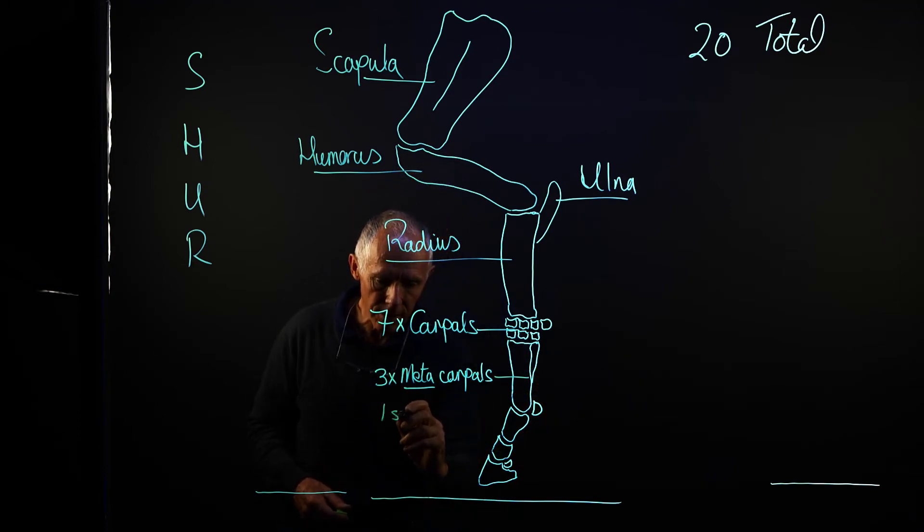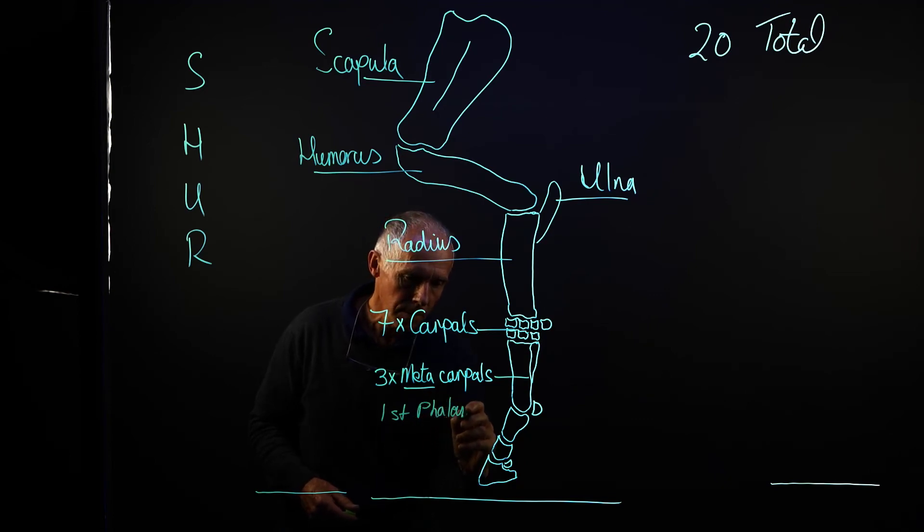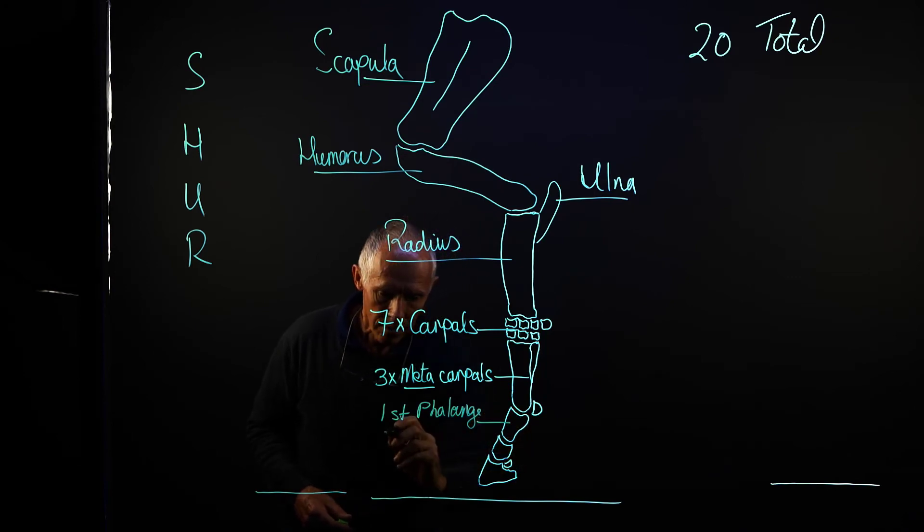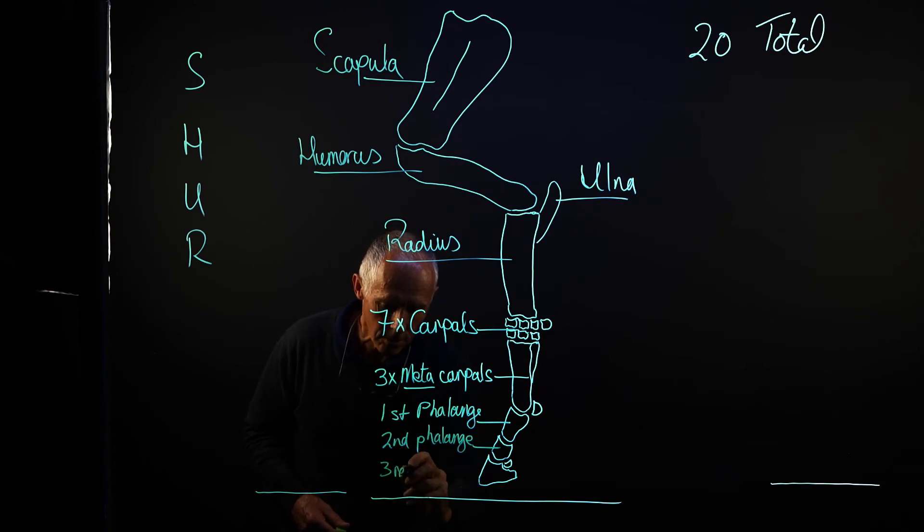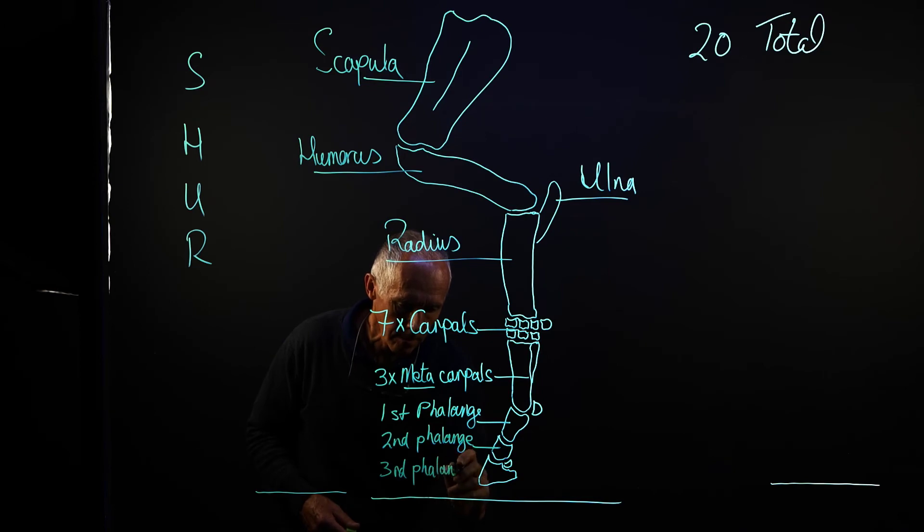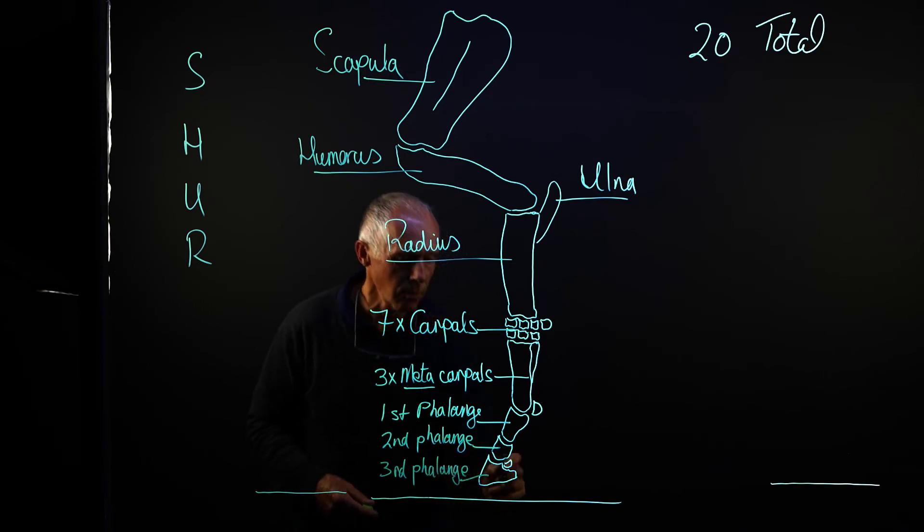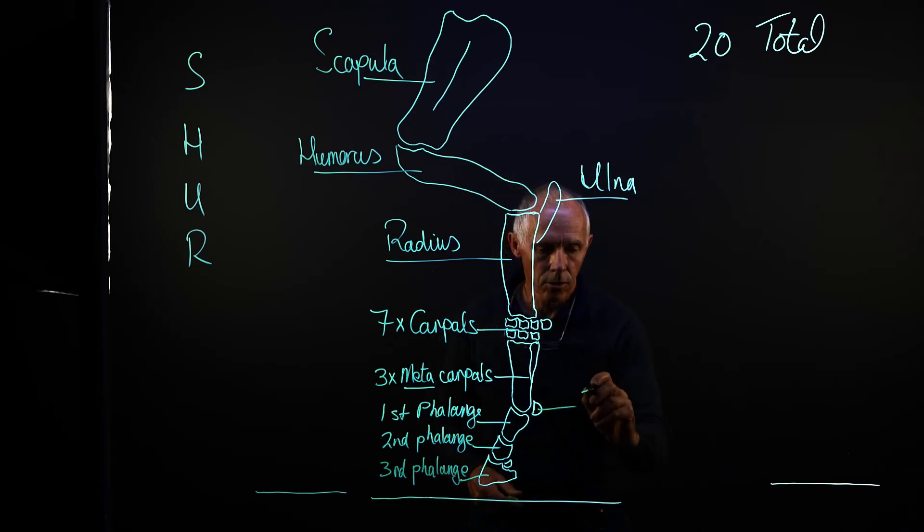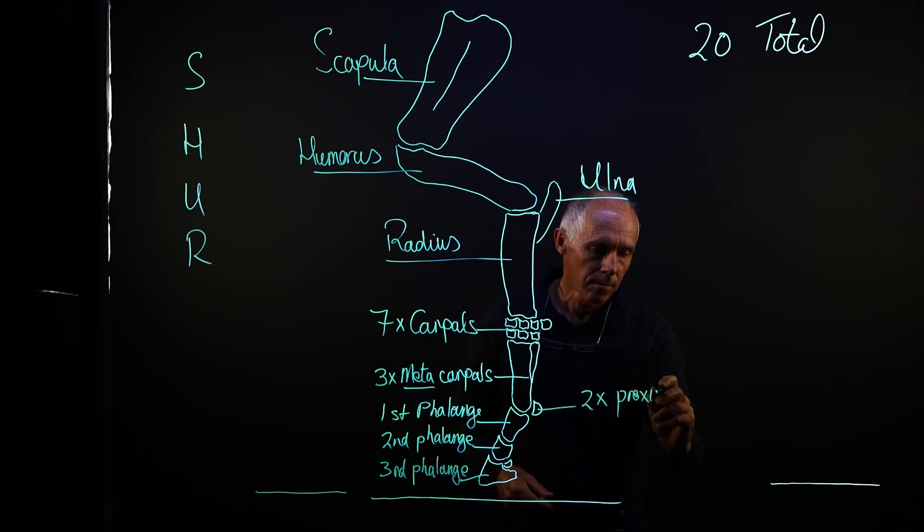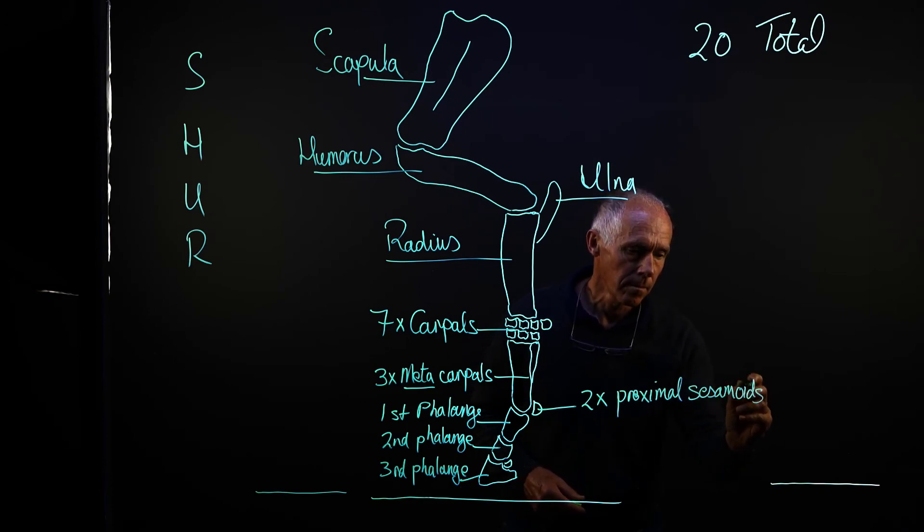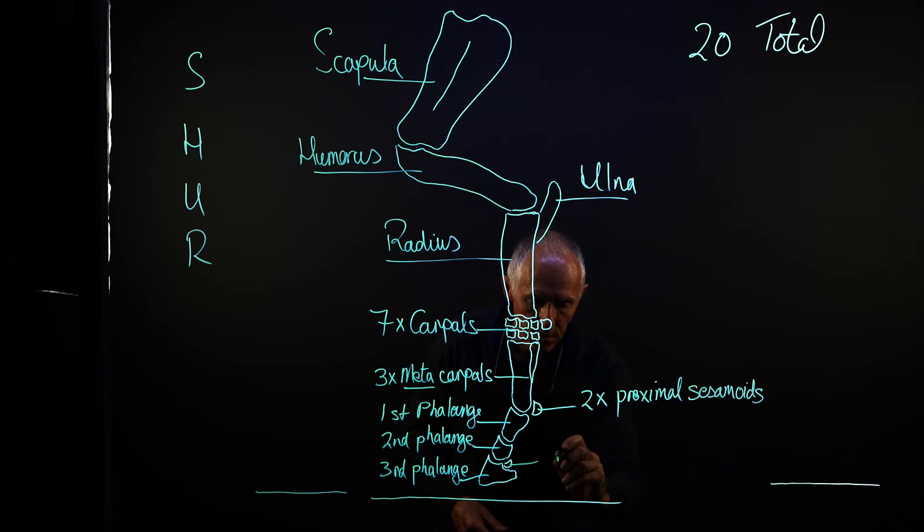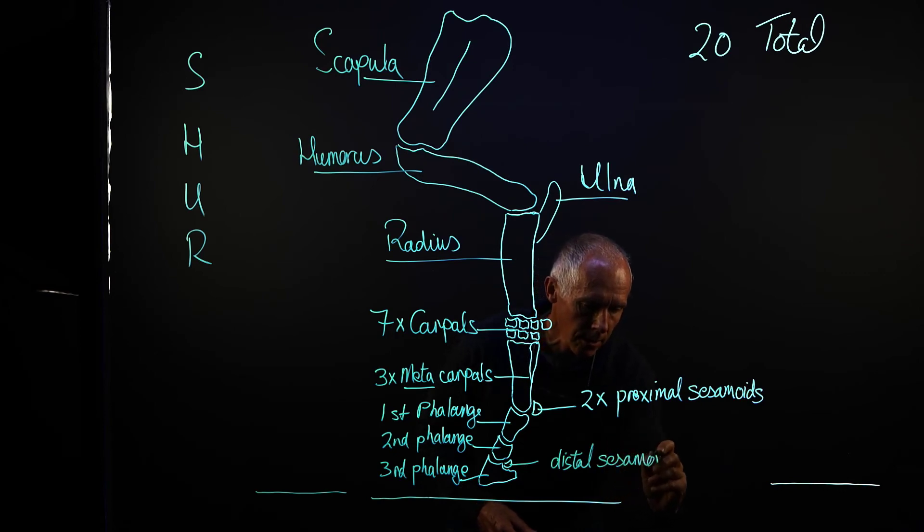Then we have the first phalange, our long pastern bone, the second phalange or short pastern bone, and then of course the third phalange or coffin bone. In addition, we have two proximal sesamoids and one distal sesamoid, also known as the navicular.